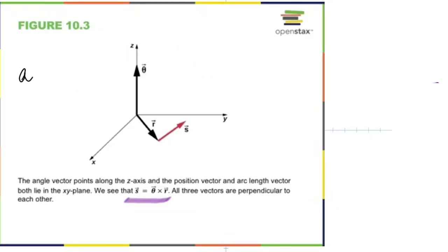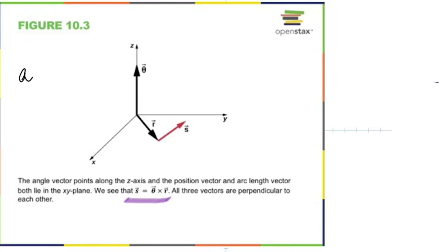It becomes more interesting now because it's 3D. Didn't we define angle as S divided by R? But S is a vector and R is a vector — both of them are in the xy plane. Is this rotation clockwise or counterclockwise? Counterclockwise — and theta is up. So if you take your right hand and hold it with the fingers showing the direction of rotation, the thumb will always give you the direction of the angle.